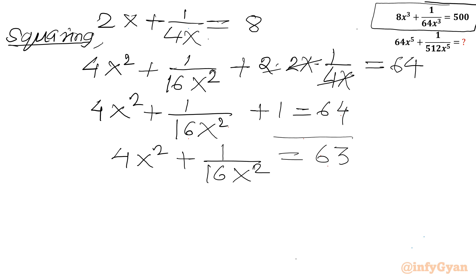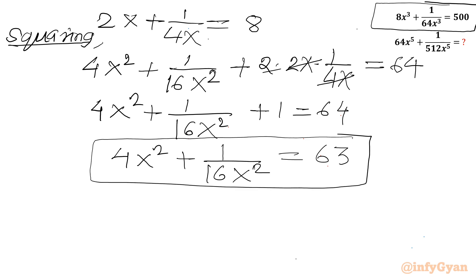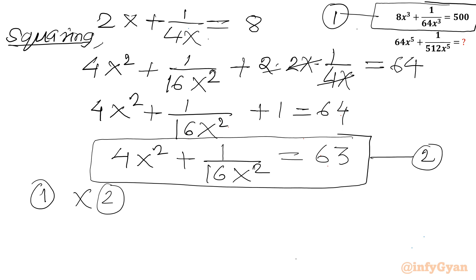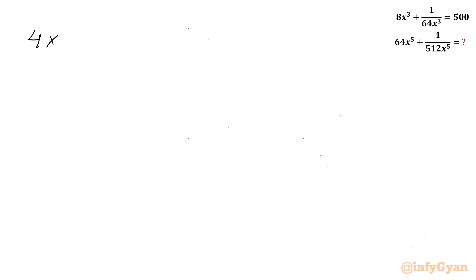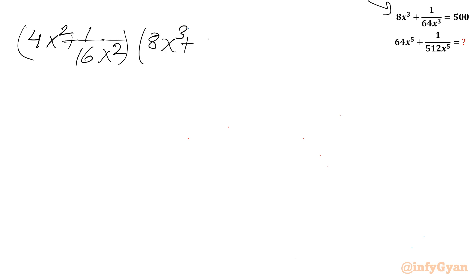Now I will multiply equation 1 (8x³ + 1/(64x³) = 500) by equation 2 (4x² + 1/(16x²) = 63). The left-hand side is the product (4x² + 1/(16x²)) × (8x³ + 1/(64x³)), and the right-hand side will be 63 × 500.